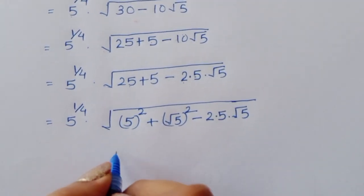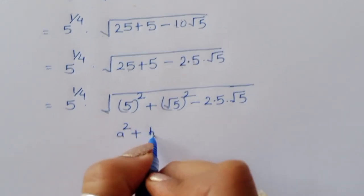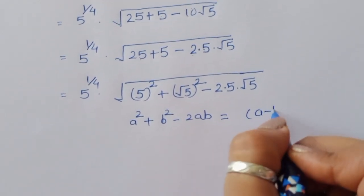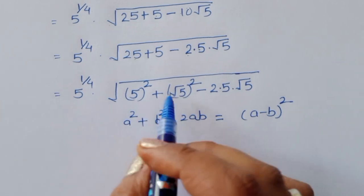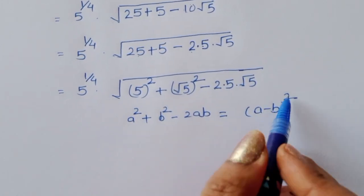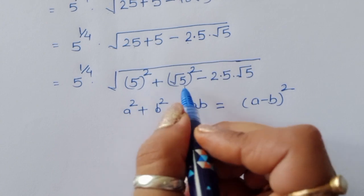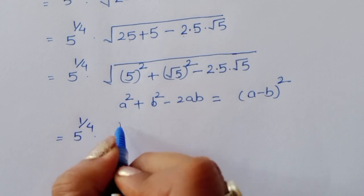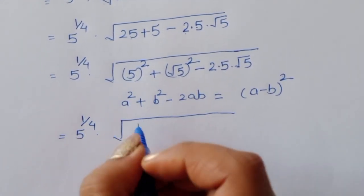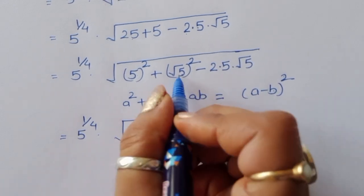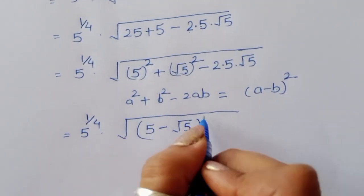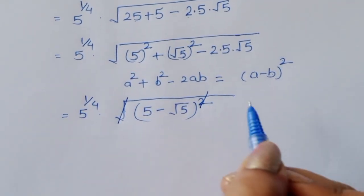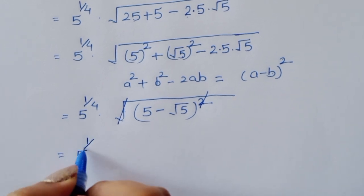Using the formula a² + b² - 2ab = (a - b)², we can replace the expression inside the square root with (5 - √5)². Now we have 5^(1/4) times the square root of (5 - √5)². The square root cancels the square, giving 5^(1/4) times (5 - √5).